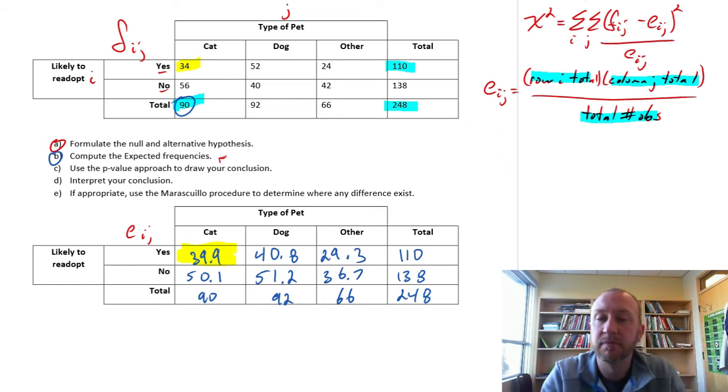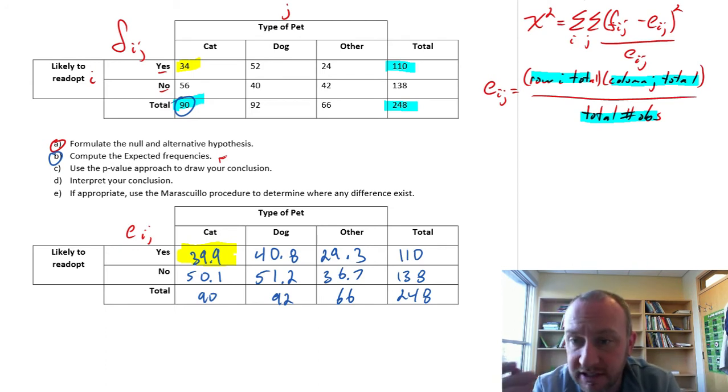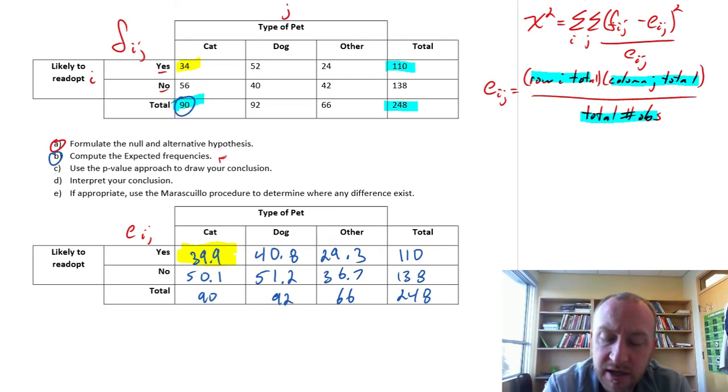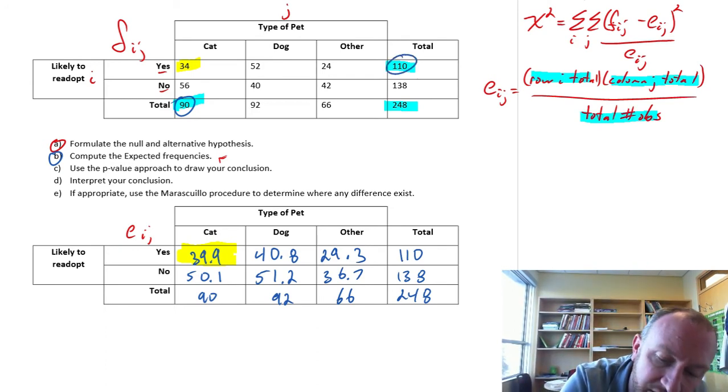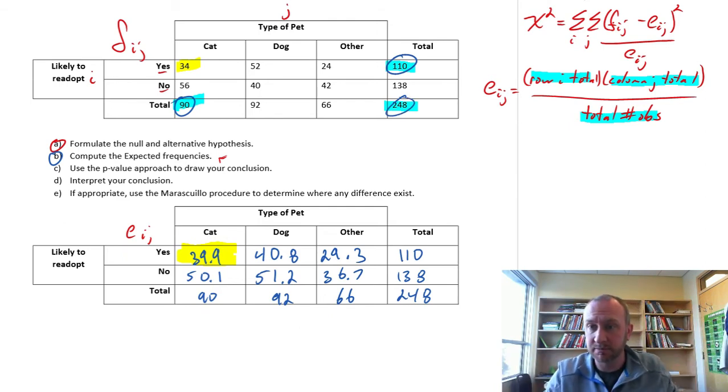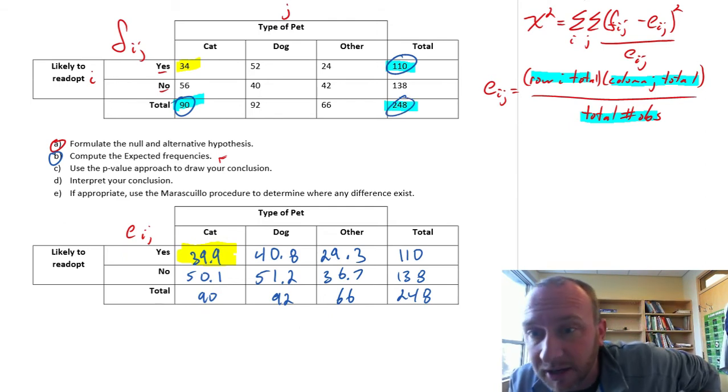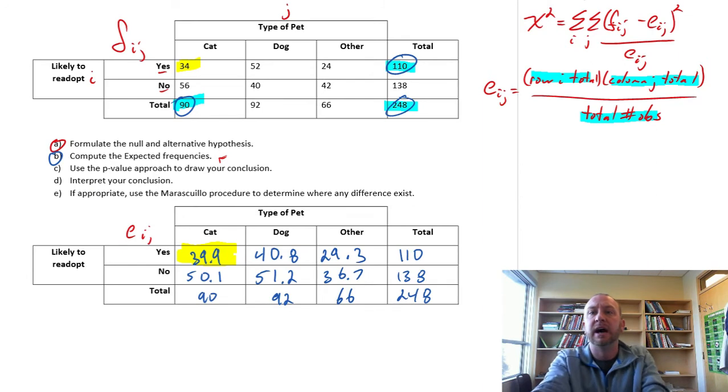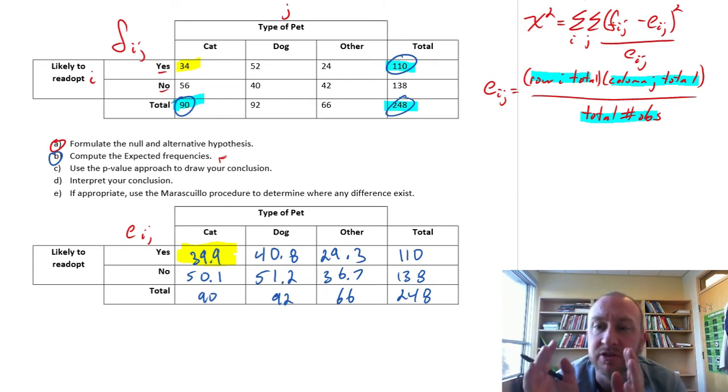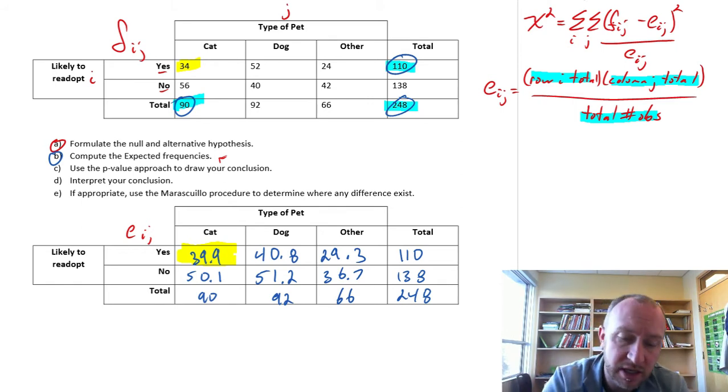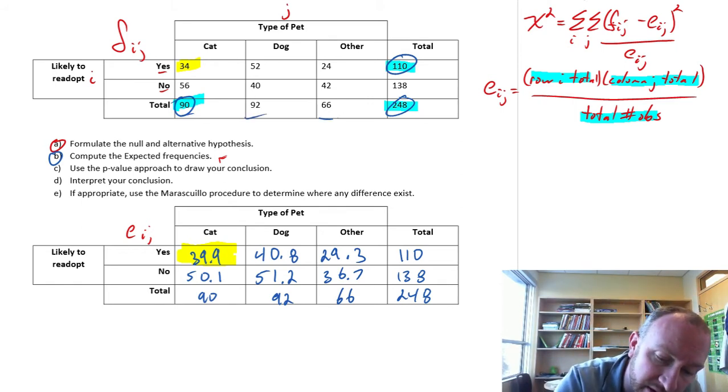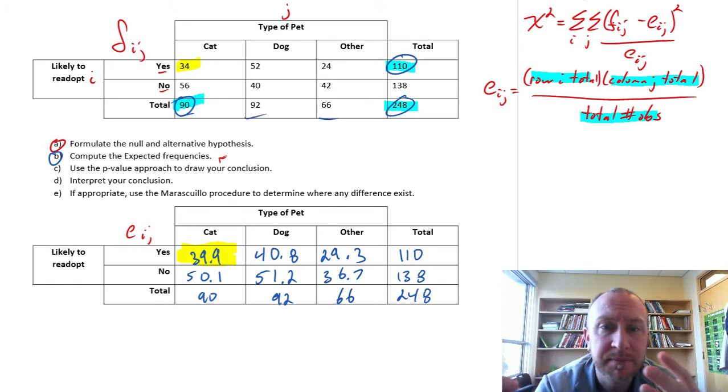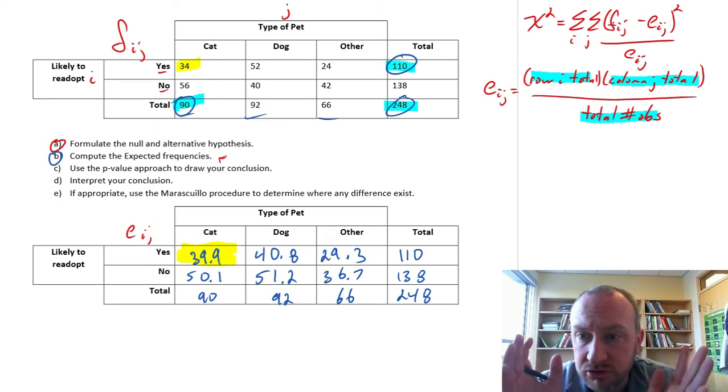I've got to scroll down a little bit because the pen acts funny when I get below this, close to the bottom of the screen. This is 50.1, 51.2, 36.7, 138. And don't really need the rest, but we'll fill it in for good measure. 248. Okay, so there's our table of expected frequencies. So again, if there is no difference across these three populations, our best point estimate of that common population proportion of people who would readopt the same species of animal is 110 divided by 248. Using that common proportion and the number of people, the number of observations that we have, we've calculated, what do we expect those proportions to be if the null hypothesis is true.